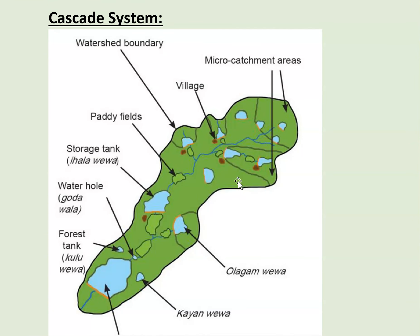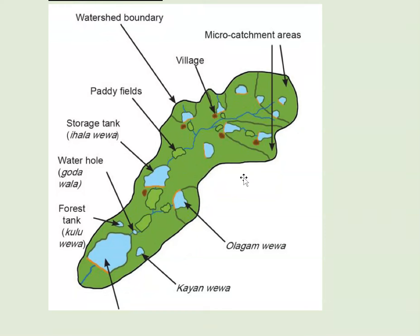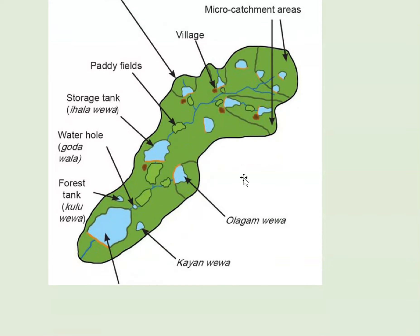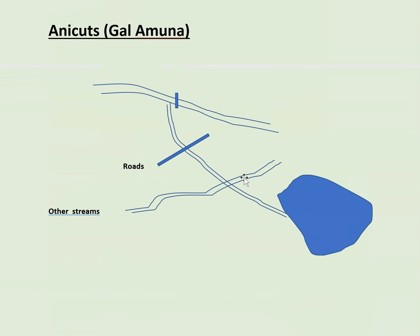The next step was the cascade system. Water comes to a reservoir from a river, and rather than letting the spill water go to waste, they built more reservoirs downstream, creating a cascade system. During dry periods there was still no water, so the next idea addressed that.